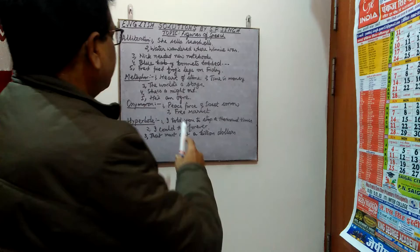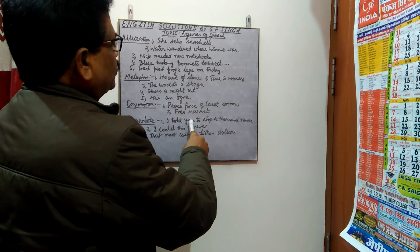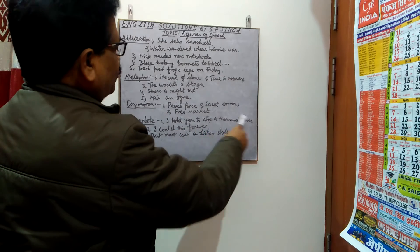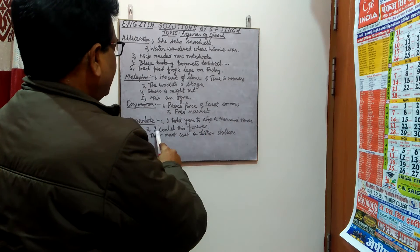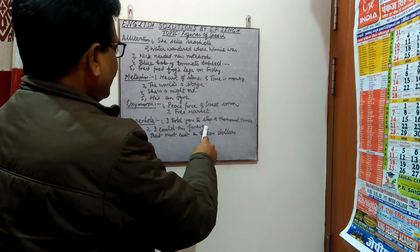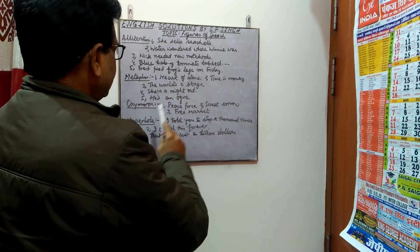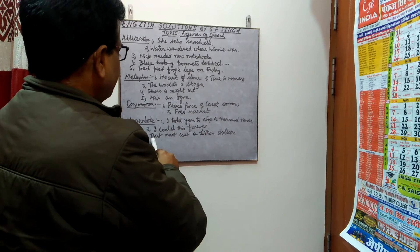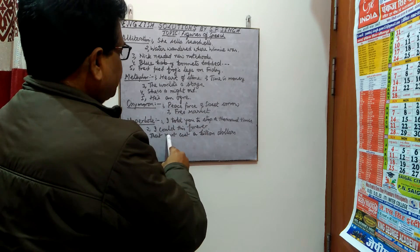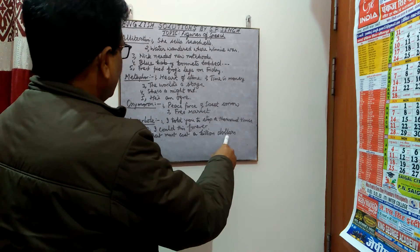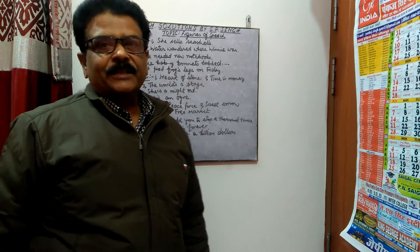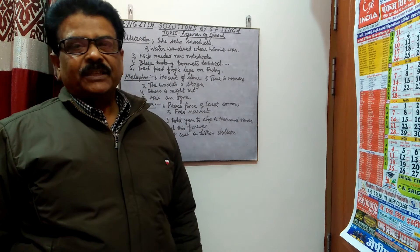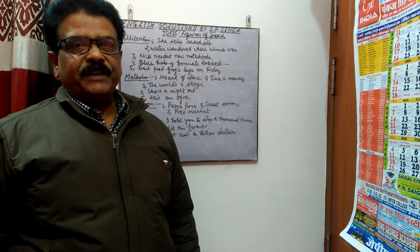The fourth figure of speech is hyperbole. In hyperbole we exaggerate or magnify things. Examples are: 'I told you to stop a thousand times,' 'I waited forever,' and 'That must cost a billion dollars.' So four figures of speech and their examples have been presented in this video for updating your knowledge.